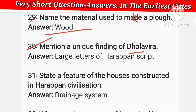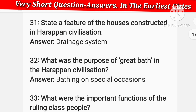Mansion is a unique finding of Dholavira. Dholavira's unique finding includes large letters of Harappan script — large lettering of the Harappan script has been found there.